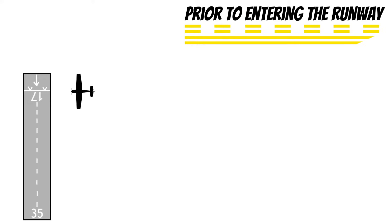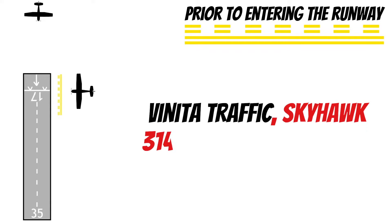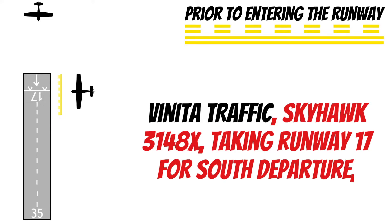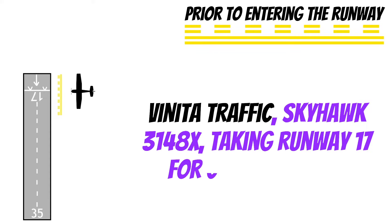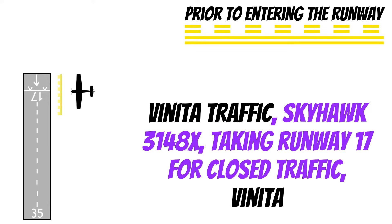Next, you should make a radio call prior to entering the runway — before you cross the VFR hold line. Also, be sure to look over and make sure nobody's on final or turning base. That call should sound like: 'Veneta traffic, Skyhawk 3148 X-ray, taking runway 17 for a south departure, Veneta.' Make sure you say which runway you're taking and your intentions. If you're doing pattern work, you'd say: 'Taking runway 17 for closed traffic.' Just be clear with your intentions — we're trying to be predictable.